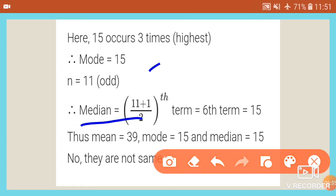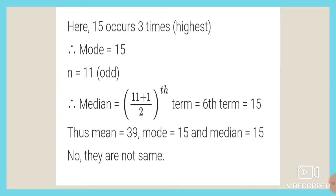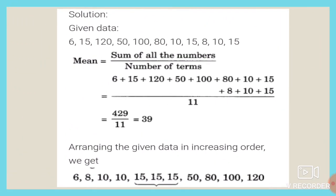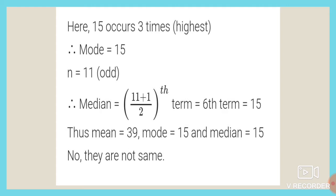For median, n = 11. Formula: (11+1)/2 = 12/2 = 6. So we look at the 6th term, which is 15. Median = 15. Summary: mean = 39, mode = 15, median = 15. Since mean is 39 and mode/median are 15, they are NOT the same.